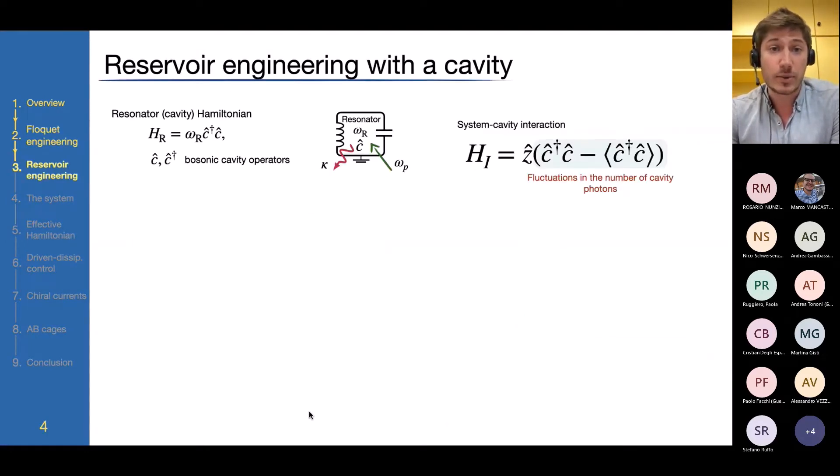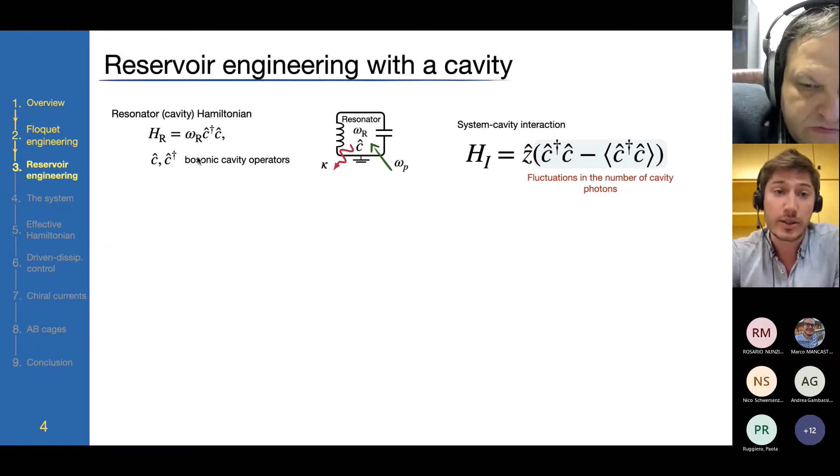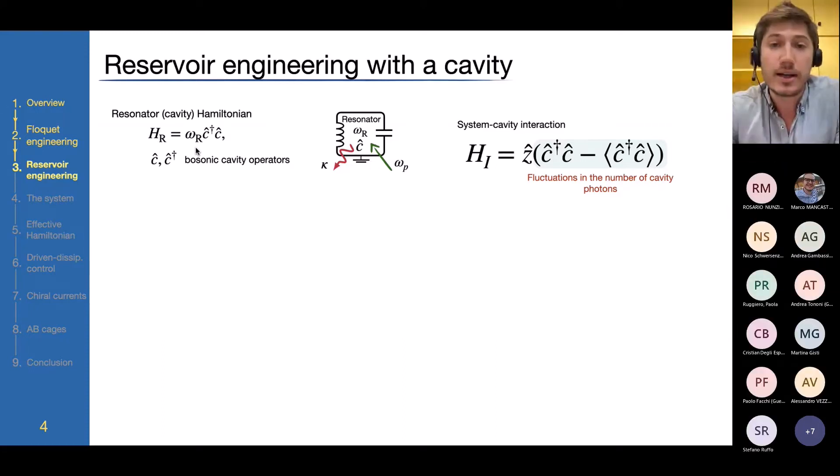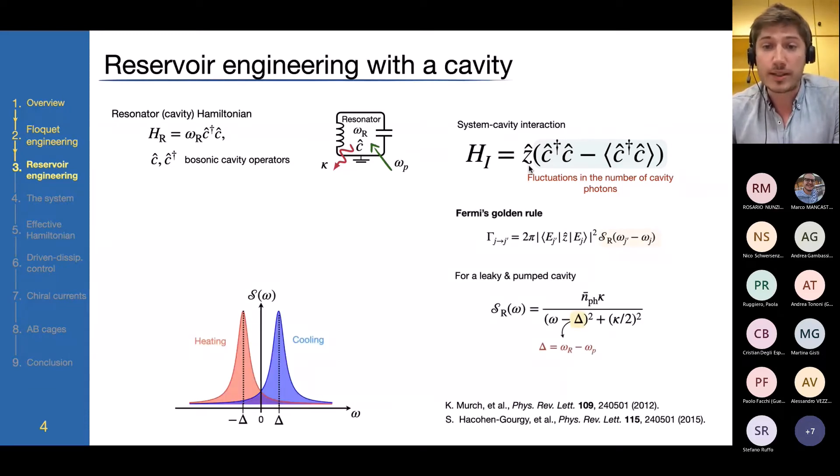Now, the second ingredient is that of reservoir engineering, and for that we will make use of a cavity. A cavity can be thought of as a quantum mechanical harmonic oscillator with a certain resonance frequency. The type of physical systems that I will consider are so-called superconducting qubits, superconducting circuits, so these cavities in my case will be essentially so-called microwave resonators. Let's say that our system couples to this harmonic oscillator with a coupling of this form, so it couples to what we could call the fluctuations in the number of photons that are inside this cavity mode.